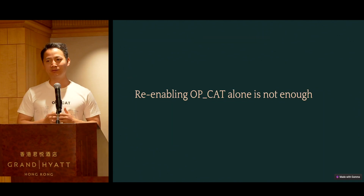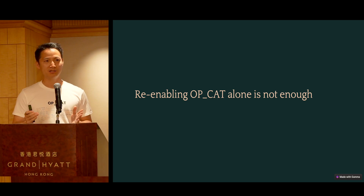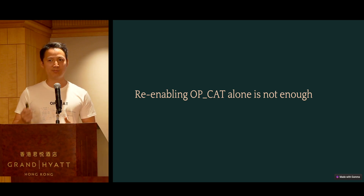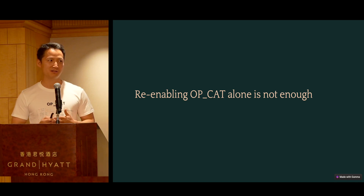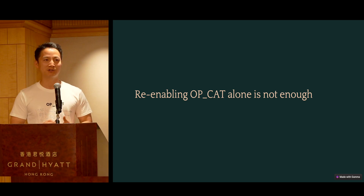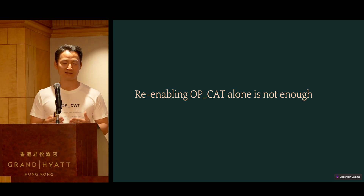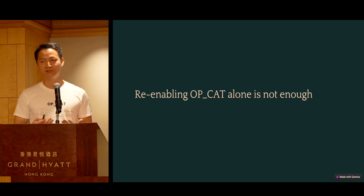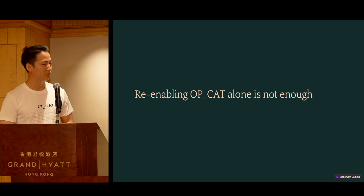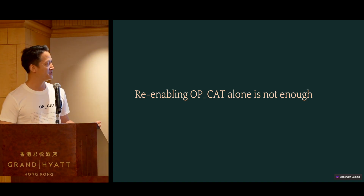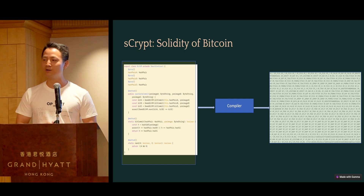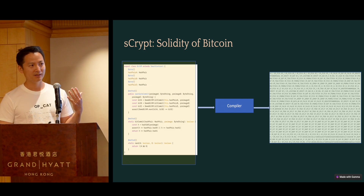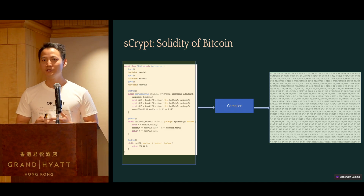But simply reactivating OpCAT is not going to do the job on its own. It's like: now you have the calculator and you can re-enable this button, but it's not just going to lead us to hyperbitcoinization. We still have a lot of work to do. That's what we have been doing for the past six or seven years. We started with some Bitcoin forks that have OpCAT — we started from Bitcoin Cash because that's the fork that first re-enabled OpCAT. We have been doing a lot of work in this space and are probably the longest-running team working on OpCAT for the past seven years.